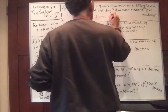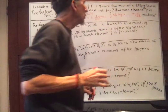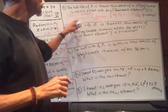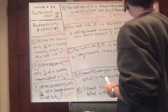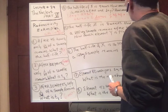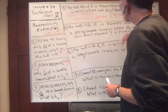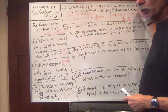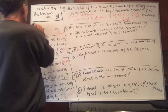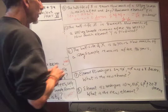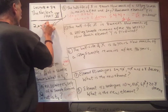1/2 times 1/2 six times equals 1 over 2 to the 6th. 1 over 2 to the 6th is 1/64th. So 1/64th of 128 micrograms is 2. The answer is 2 micrograms of X remain.